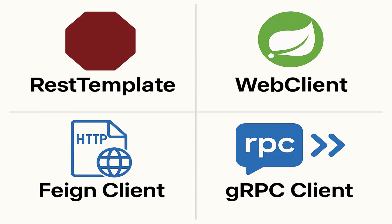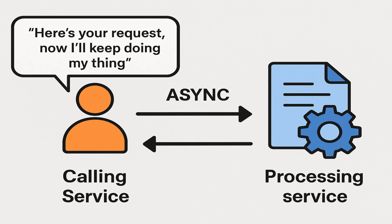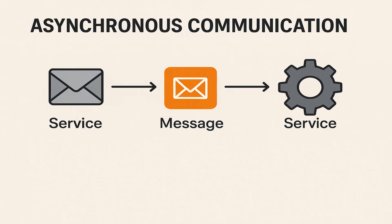Now let's move to asynchronous communication. In simple terms, asynchronous means one service sends a message to another and doesn't wait around for a response — it just moves on with its work. This is great when you don't want to get stuck waiting, especially if the other service might take some time. We usually use messaging systems like Kafka or RabbitMQ for asynchronous communication.